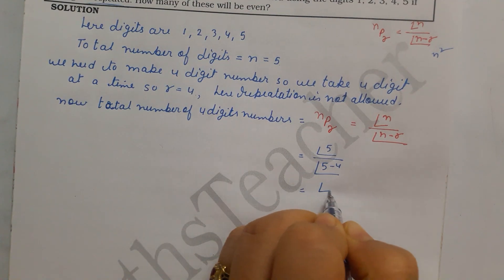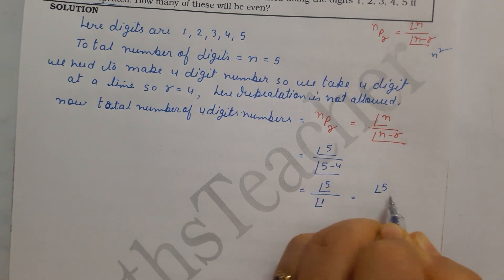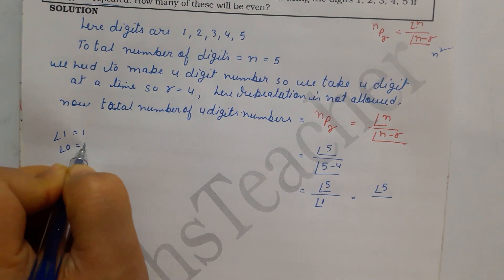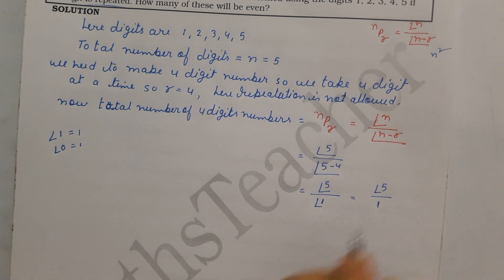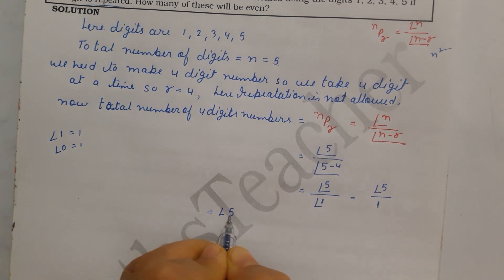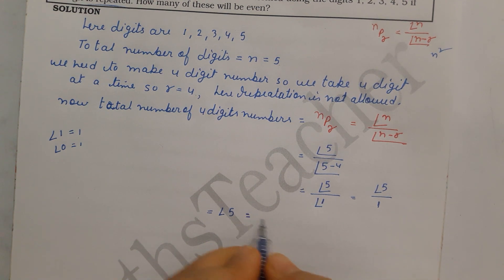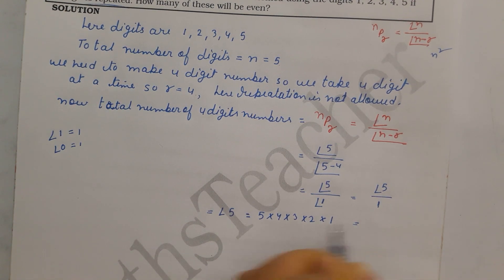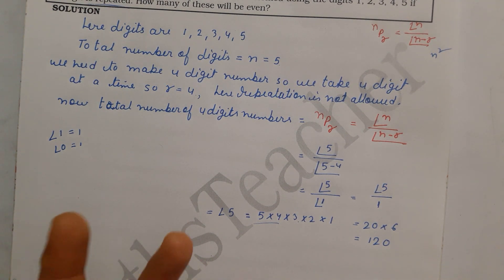Now we solve: factorial 5 divided by factorial 1. Factorial 1 equals 1, so this becomes just factorial 5. Factorial 5 equals 5 × 4 × 3 × 2 × 1. So 5 × 4 is 20, 3 × 2 is 6, then 20 × 6 equals 120. So we get 120 four-digit numbers where no digit is repeated.